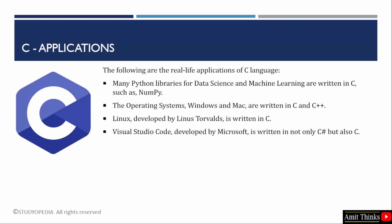Here are the real-life applications of C language. Python is one of the top choices for data science and machine learning, and some Python libraries are written in C, like the NumPy library, which is used for data manipulation. Some operating systems like Windows and Mac are also written in C and C++. Linux is also written in C and was developed by Linus Torvalds. VS Code, developed by Microsoft, is written in multiple programming languages, one of which includes C.